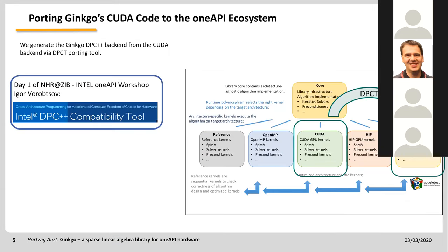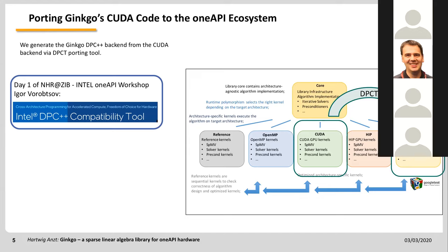The approach we took for creating a DPC++ backend for Ginkgo is very much based on the DPC++ compatibility tool. For those who haven't attended the talk by Igor Robachev, I think it is an excellent talk and I heavily recommend it. We made heavy use of that tool. However, as Igor already indicated, for complex code bases it might not be straightforward — some manual fixes may be necessary, and this was the case for us.